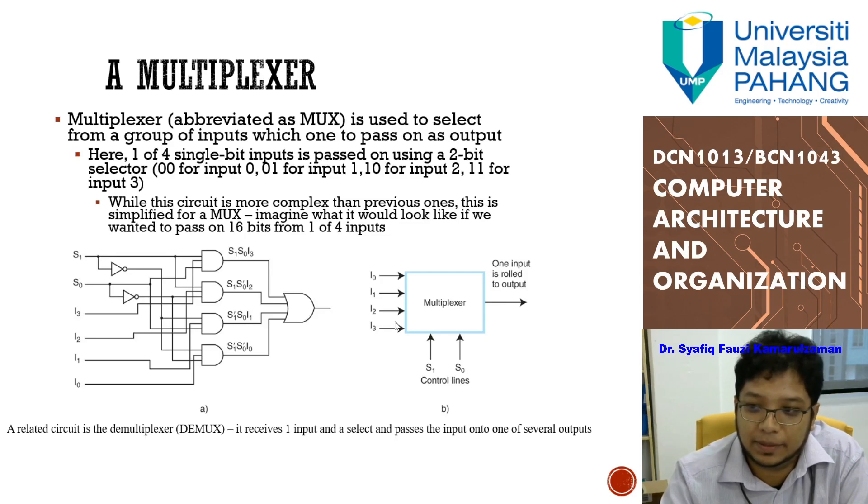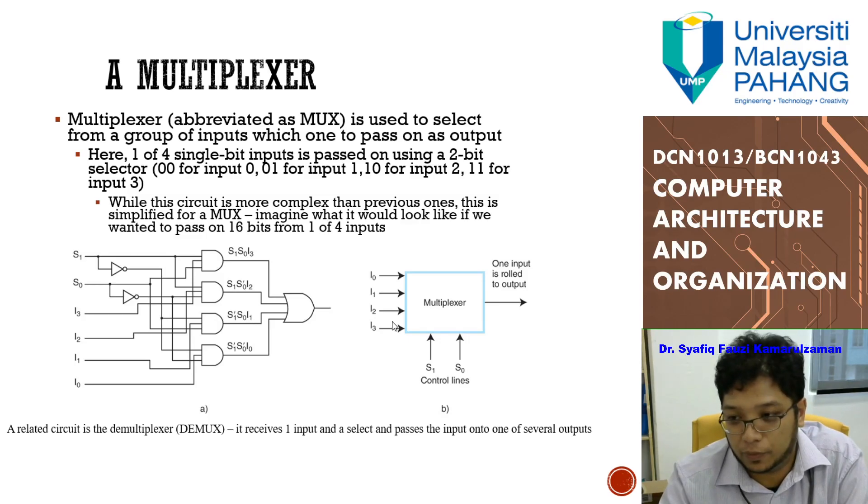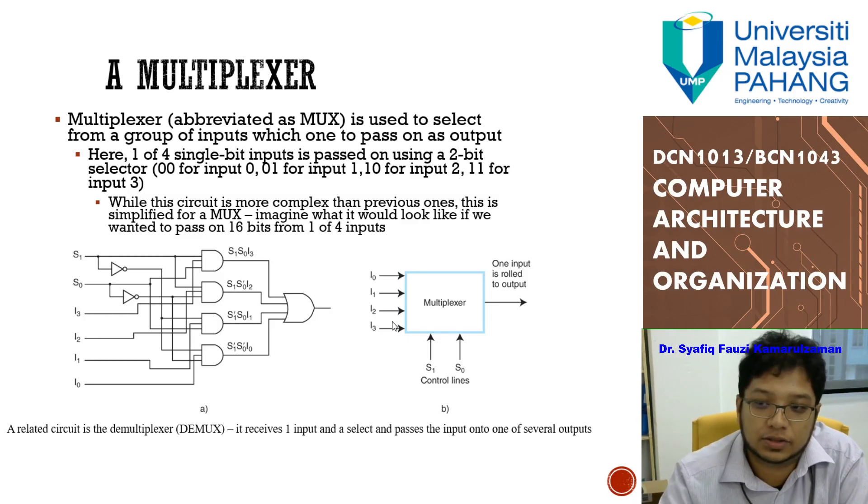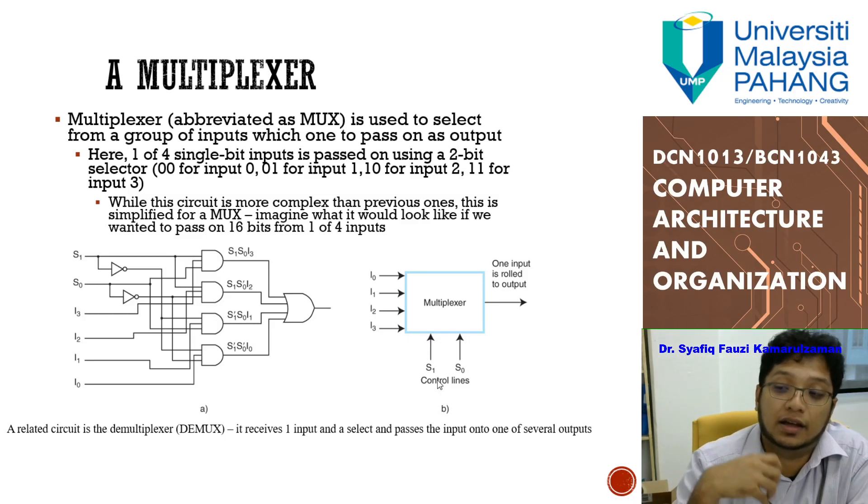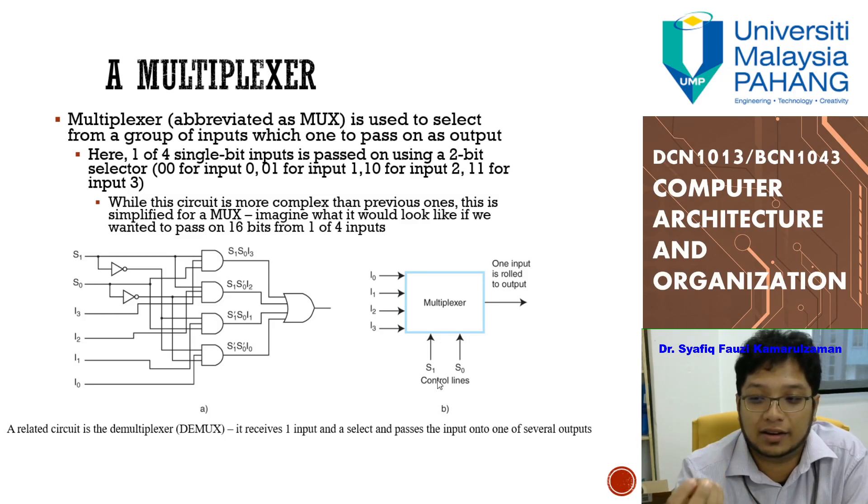Then we have a multiplexer. A multiplexer is where you decide what kind of output you want. You have, for example, three inputs and you only want one output, one of the outputs to come out. By using the control lines in the multiplexer, you can give an input so that the multiplexer will select the output that you want as the output. This is where a multiplexer comes in and how it works.